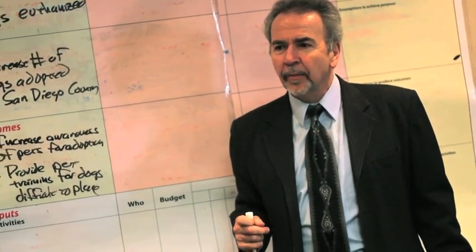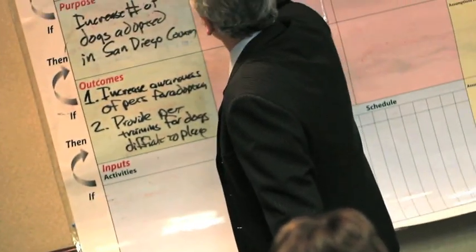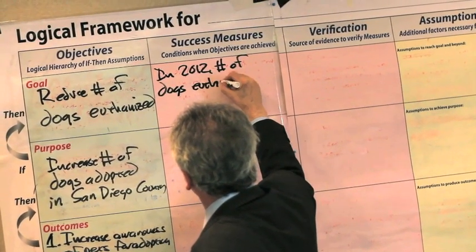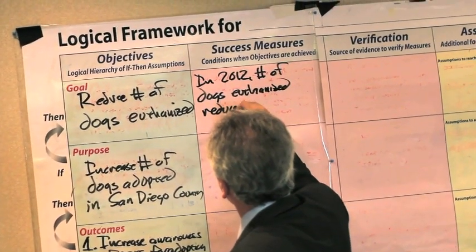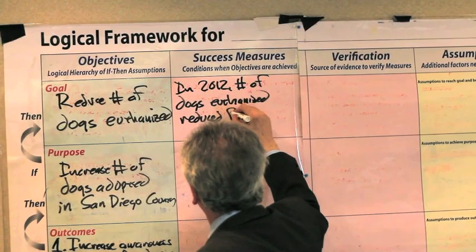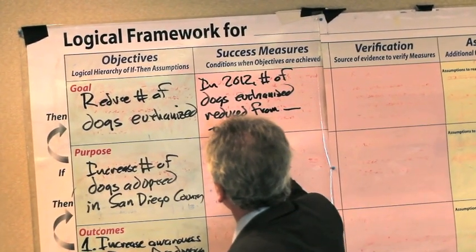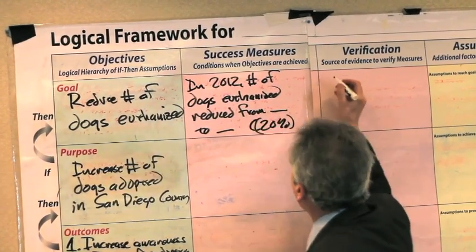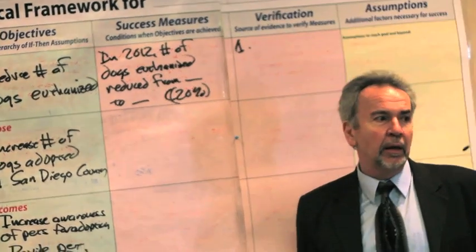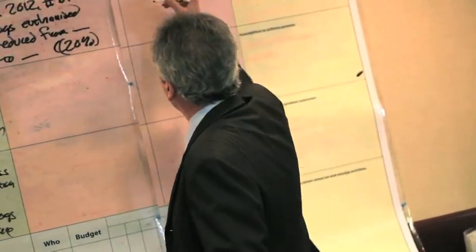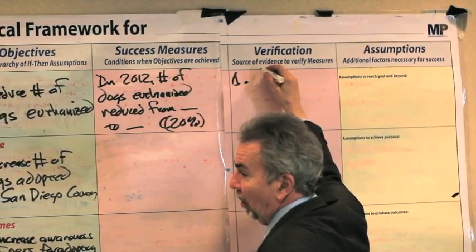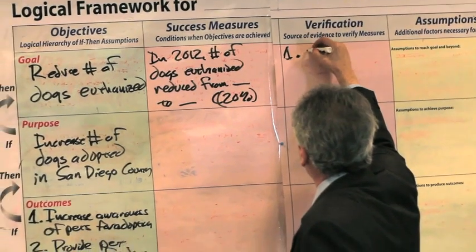Past statistics would be a means of verification. So let me structure a measure here: that in the year 2012, the number of dogs euthanized is reduced by 20% — or reduced from X to Y. Verification for that would be: measure the number of dogs euthanized — measure 2011, measure 2012. Medical records are the place where they were euthanized.